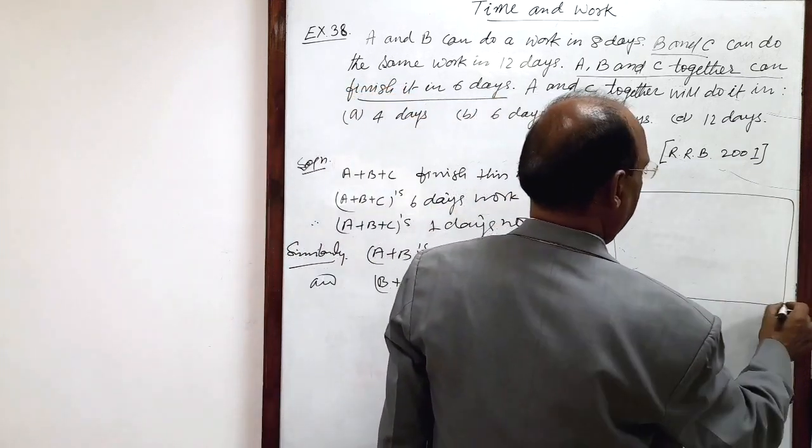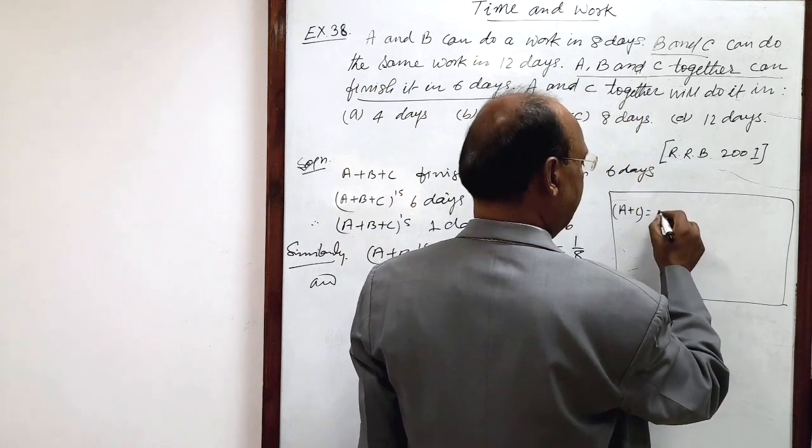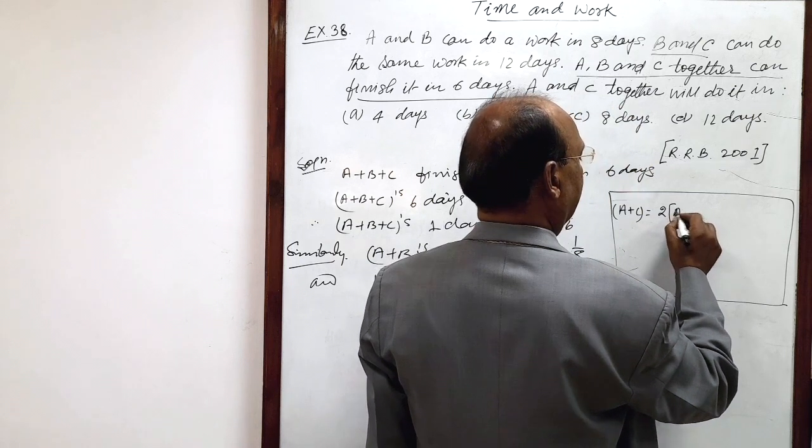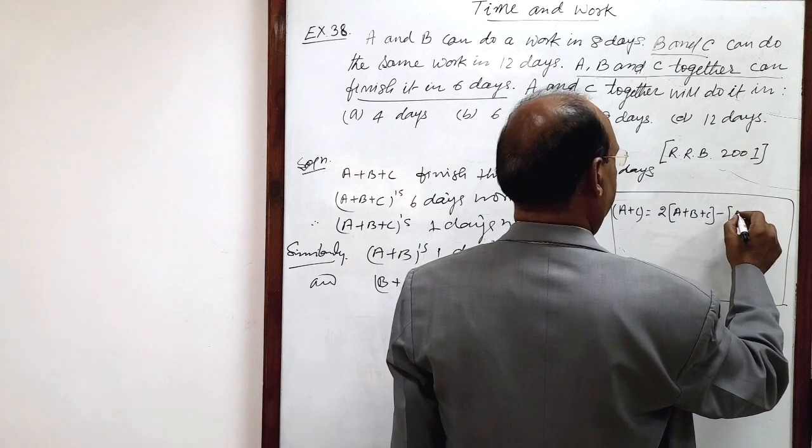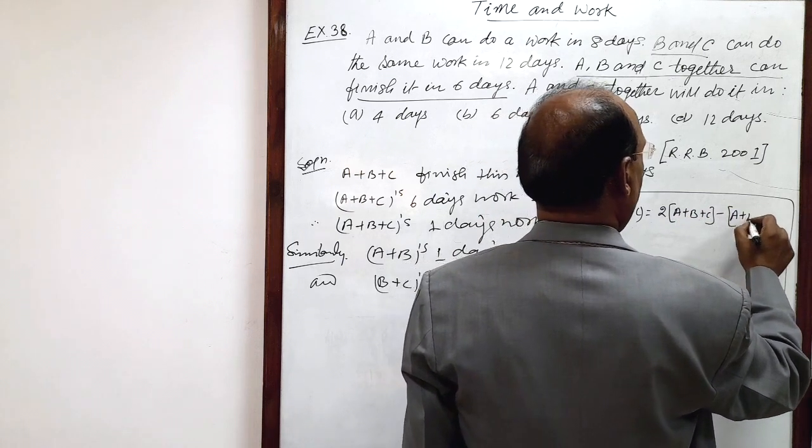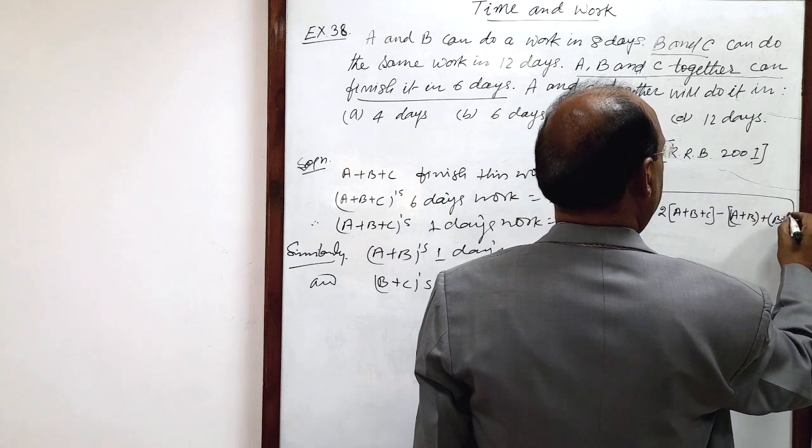a hint here, how we can find out A plus C's work. This will be equal to 2 times of A plus B plus C minus A plus B and minus B plus C.